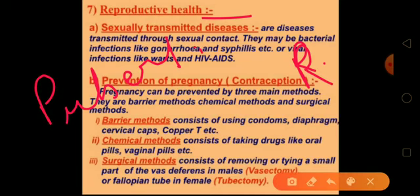Reproductive health includes aspects that ensure a responsible, safe, and satisfying reproductive life. It is our responsibility, and also the responsibility of the nation, to provide necessary information and general awareness regarding reproductive health to every individual. Everyone must know that marriage and childbearing during a more mature stage of life are important for the reproductive health of a society.